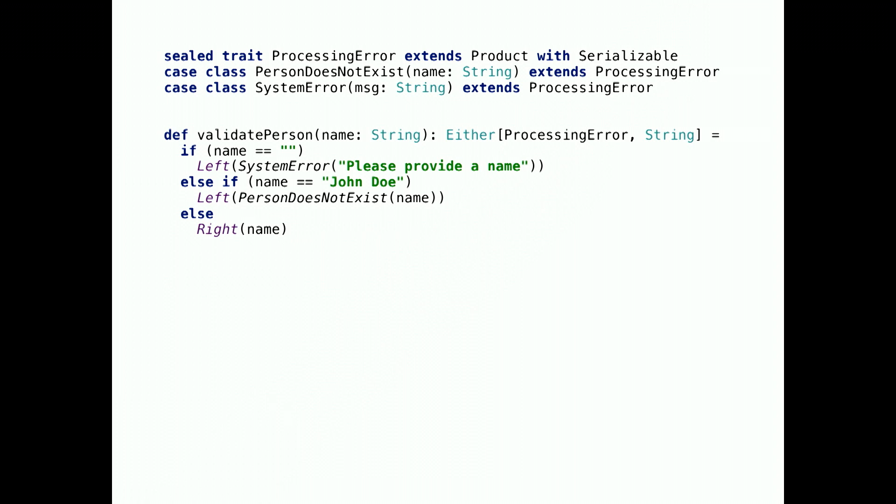Let's take a look at a slightly more substantial example which uses either for handling. We have a trait processing error which we'll use on our left side. Basically, this trait is just going to be any error that we want to bubble up to the end user. Maybe someone's using this library and these are the errors they're going to see. The method validatePerson simply takes in a string and returns an either of this processing error or a string. If they pass in a null or an empty string, we will return a system error wrapped in a left. That's an invalid state, so you get an error back. If they pass in a name that is John Doe, we will also treat this as an error, a person does not exist error also wrapped in a left. And lastly, anything else that they pass in for name, we will treat as valid and return this as a right.